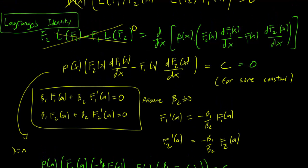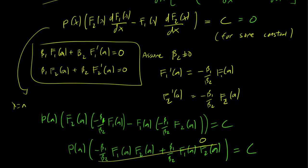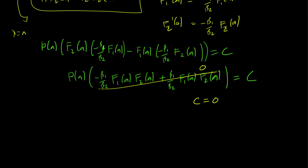And we have, therefore, shown that f2 f1 prime minus f1 f2 prime must be equal to 0, so let's write it down. f2 f1 prime x minus f1 x f2 prime x equals 0.